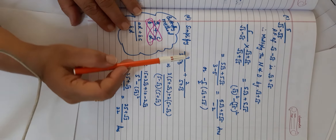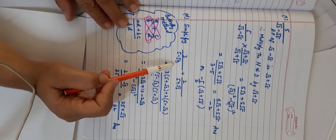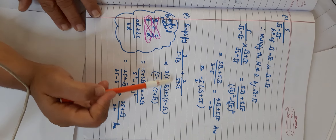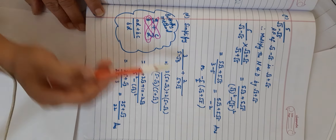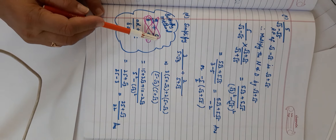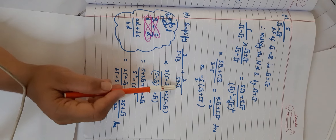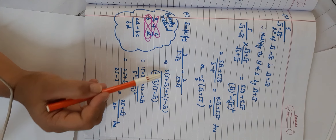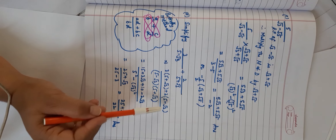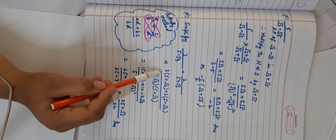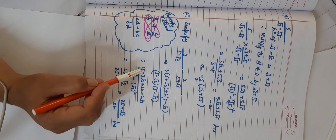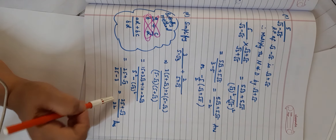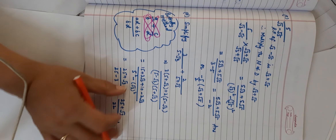Next question: simplify 3/(5−√3) + 2/(5+√3). These two are conjugates of each other, so applying the butterfly method is more convenient: (A×D + B×C)/BD. Multiply 3 by (5+√3) and 2 by (5−√3): (15+3√3+10−2√3)/(5²−(√3)²) = (25+√3)/(25−3) = (25+√3)/22. This is the answer.